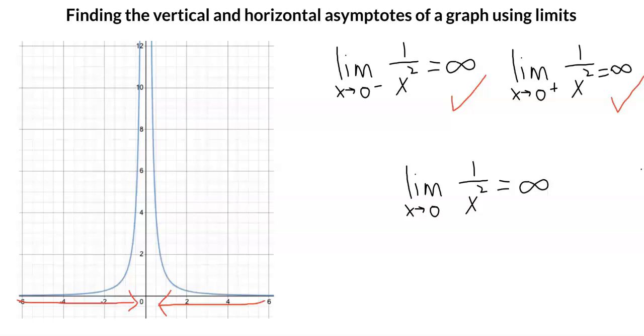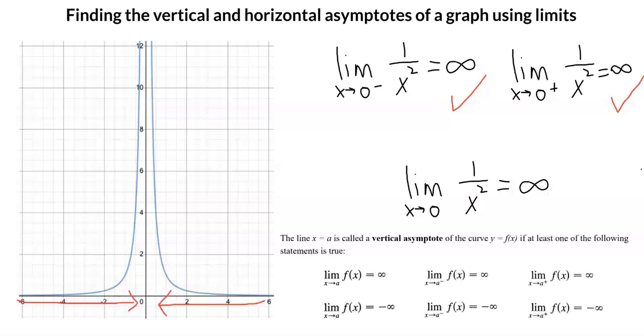Now we can compare this example to the definition of how to determine a vertical asymptote. You might notice that in the example we just did, the value for a is zero, and the function f(x) was 1/x². The solutions to each of the limits we solved were all infinity.